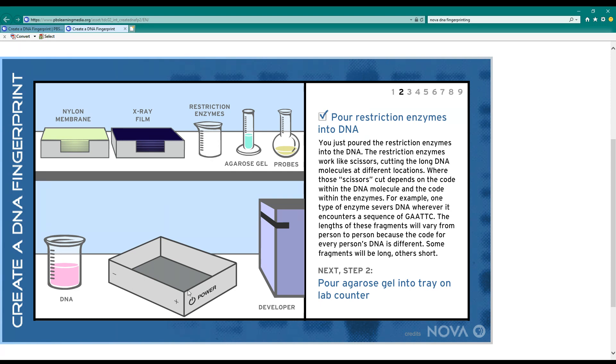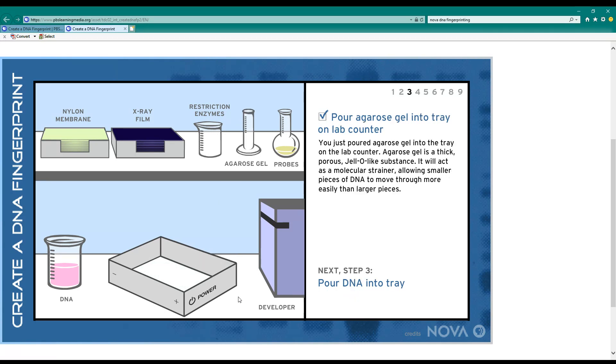Okay so next I have a tray called an electrophoresis tray and some agarose gel. It's about the consistency of finger jello but it's made out of seaweed.